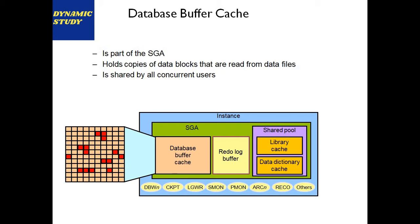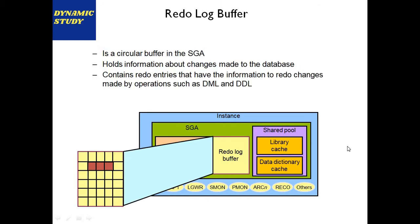In the architecture diagram, the instance contains SGA, which contains database buffer cache and shared pool. The shared pool contains library cache and data dictionary cache. Background processes are also part of the instance structure.